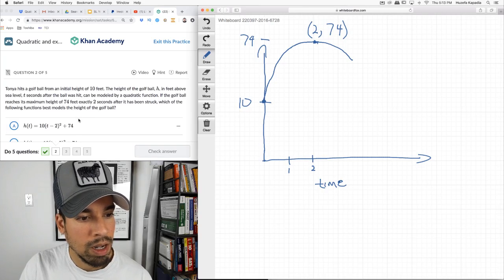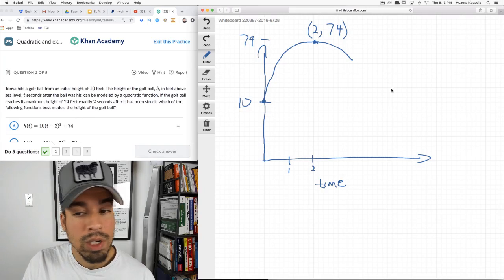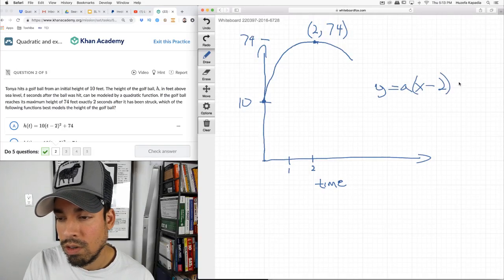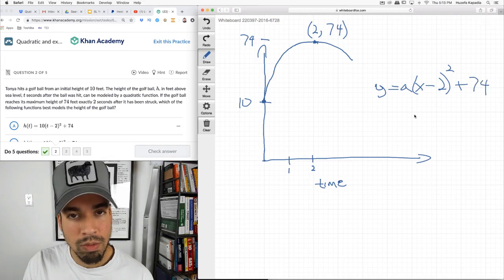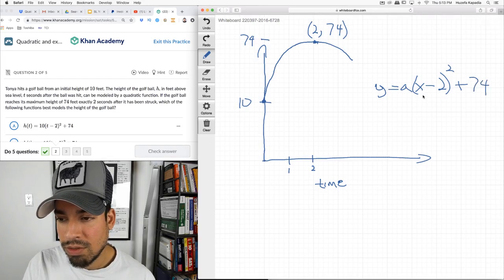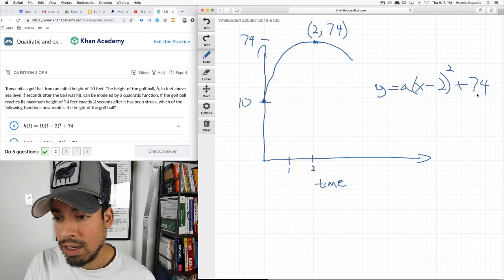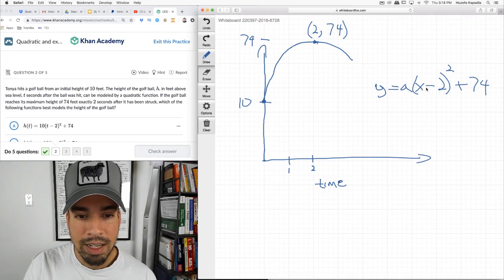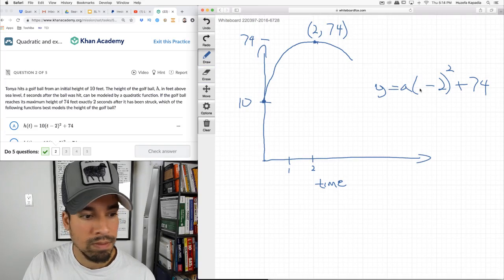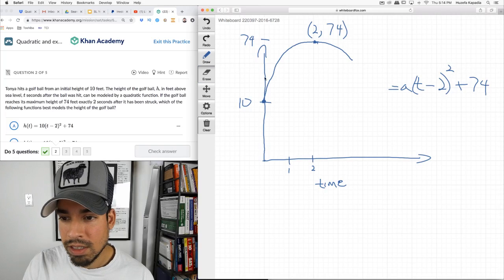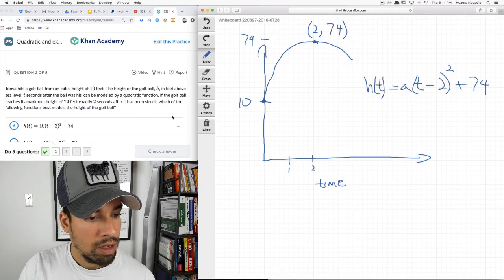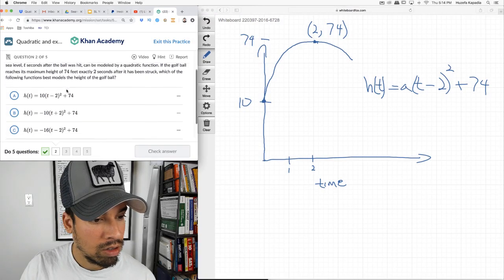Which of the following functions best models the height of the ball? So we already know based on vertex normal form, it's going to be Y equals some value times X minus 2 squared plus 74. Or it'll be T, not X. Y is the same thing as H in this case, H of T, interchangeable.